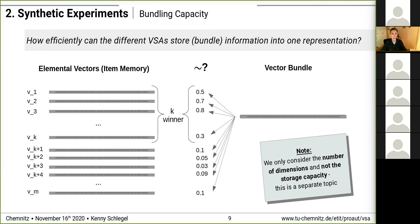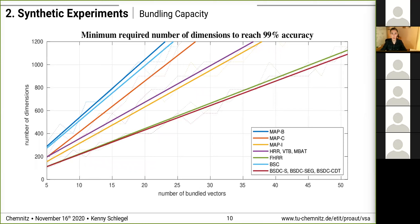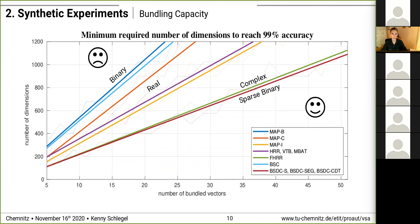The result plot provides an evaluation of the minimum required number of dimensions to achieve almost perfect retrieval for different values of k. The shallower the lines, the fewer dimensions are required and the better the capacity of the VSA. We can see different vector spaces: binary, real, complex, and sparse binary. As expected, binary vectors need more dimensions than real-valued vectors because binary vectors have a smaller range of values — only zeros and ones.